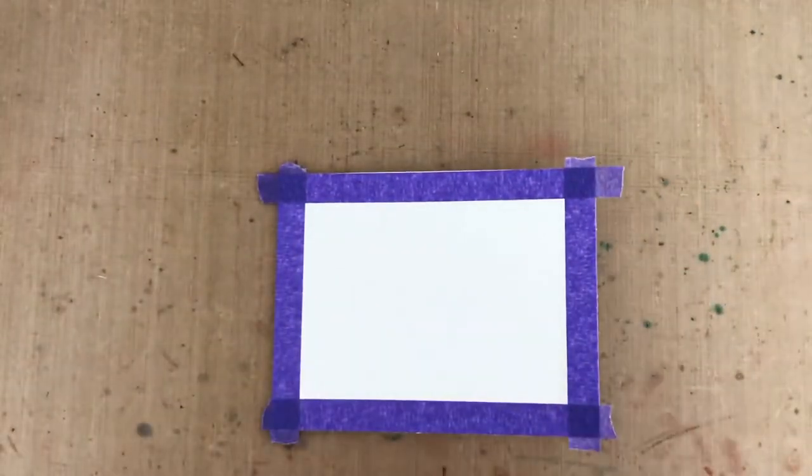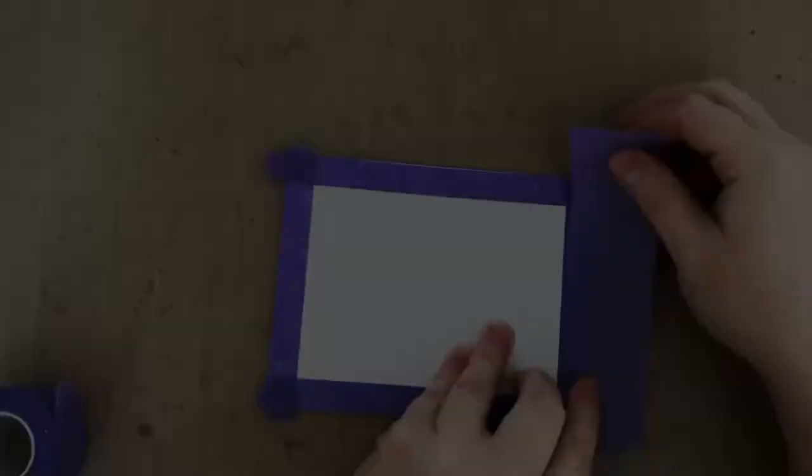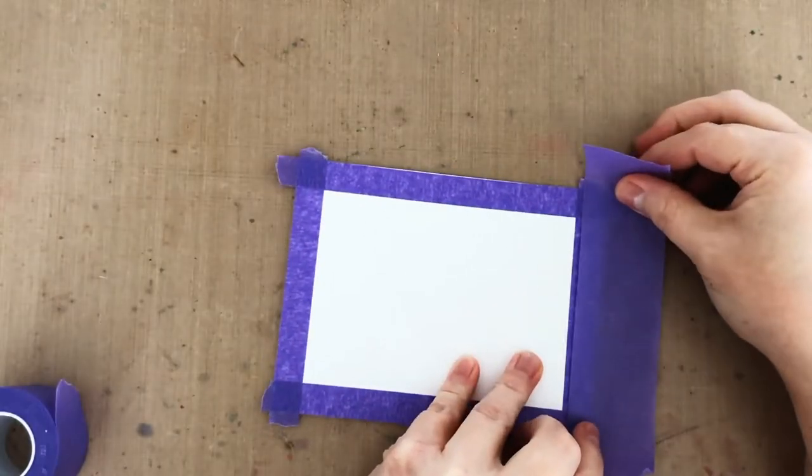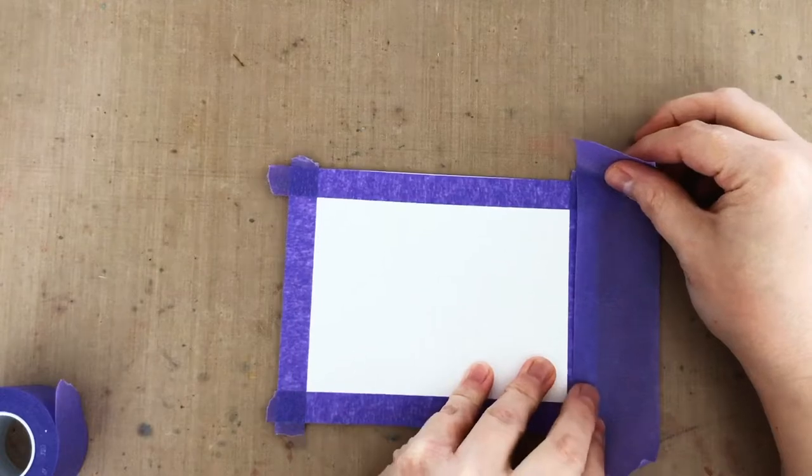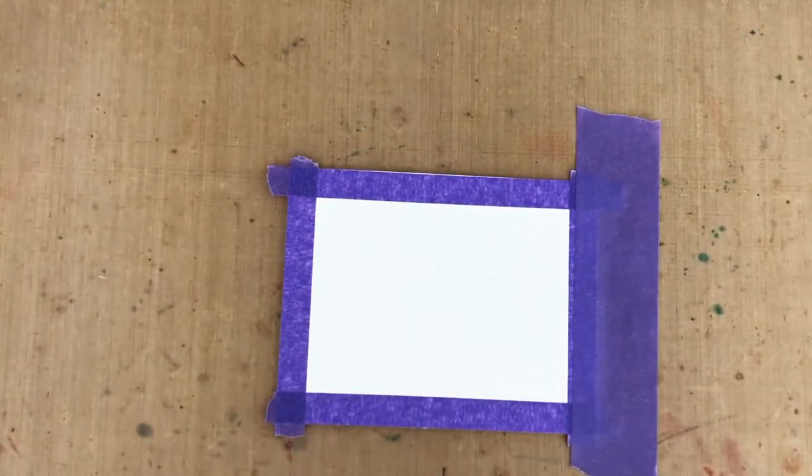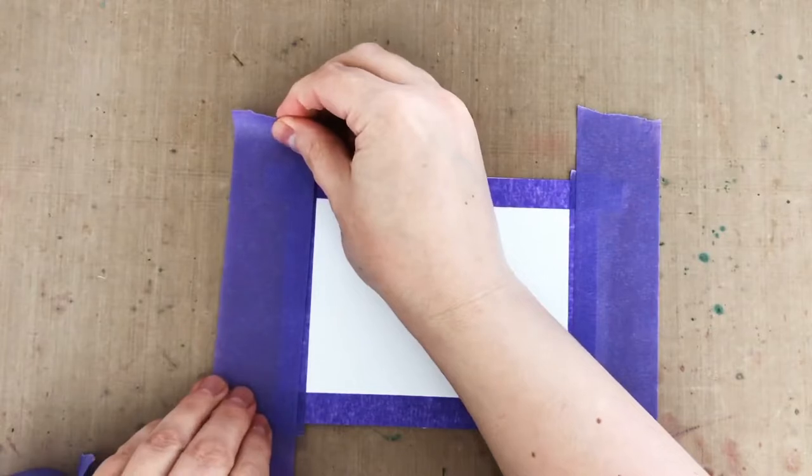The reason I like to leave the edges uninked and unglittered is that I like the edges of my white card to still be white, which is just a quirk. And I find that the foam tape I'm going to use for my shaker container sticks better to a non-glittered surface.